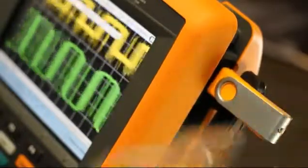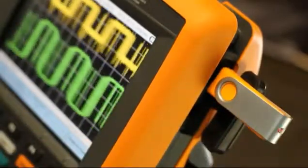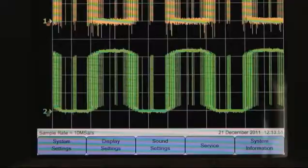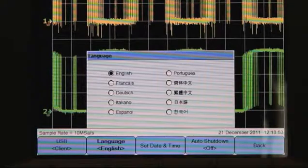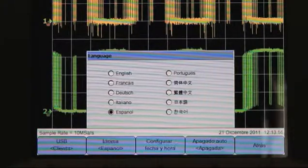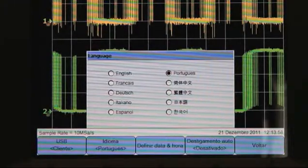Agilent U1610A and U1620A also come with a USB port which allows users to save waveforms on a memory stick. Furthermore, users can use the handheld scopes in their own language, as the graphic user interface supports 10 selectable local languages.